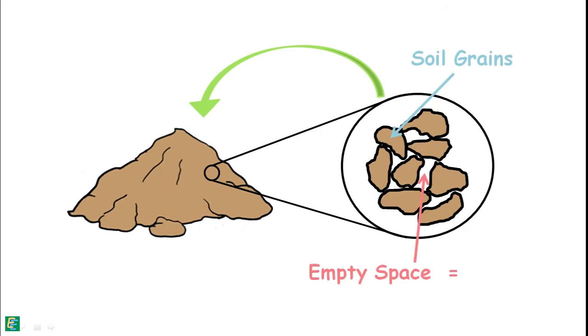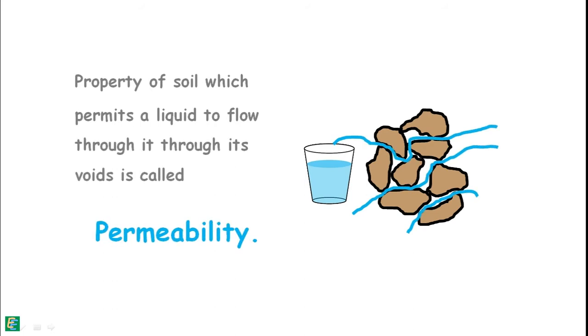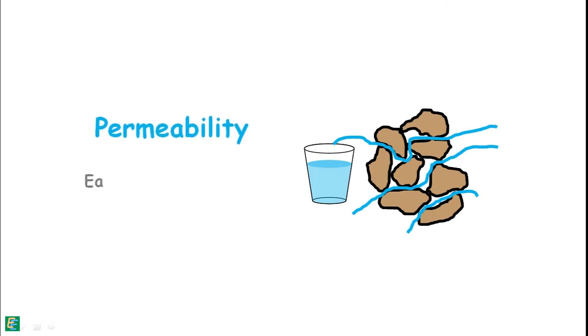We call these spaces voids. The property of the soil which permits water or any liquid to flow through its voids is called permeability. Permeability is the ease with which water can flow through soils.